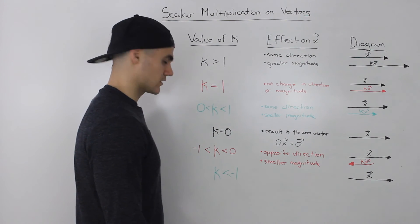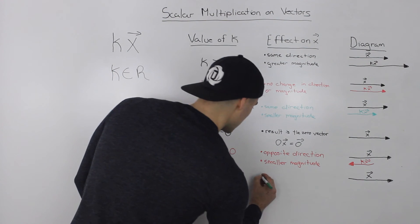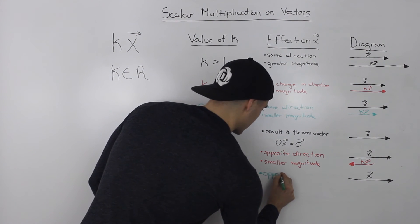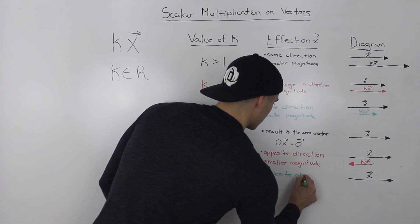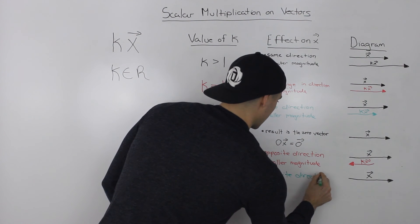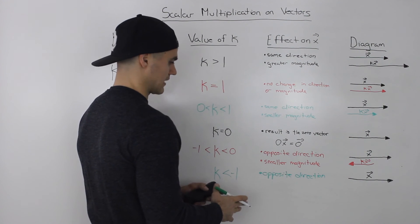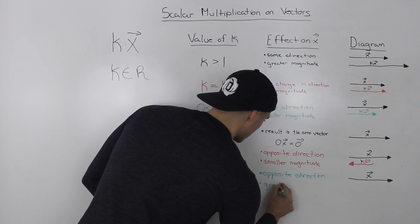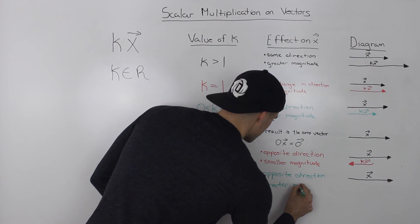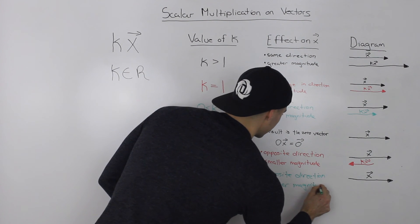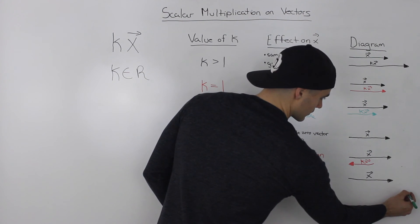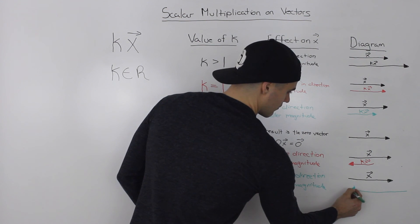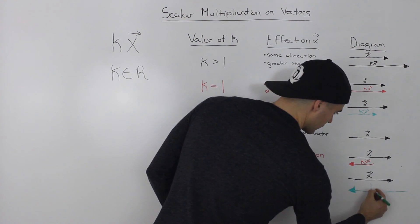And let's deal with our final case. So when k is less than negative one, since it's negative, the resultant vector will have an opposite direction. And since the absolute value of the scalar is greater than one, it will have a greater magnitude. So the resultant vector, greater magnitude, but opposite direction of the original.